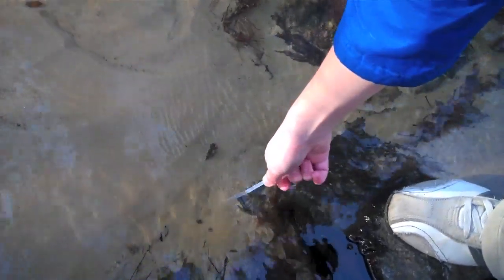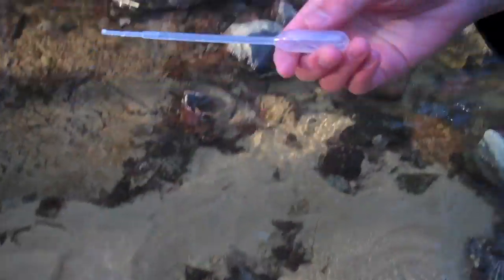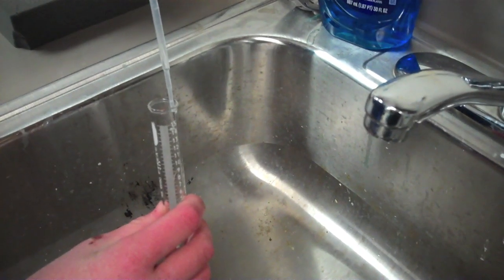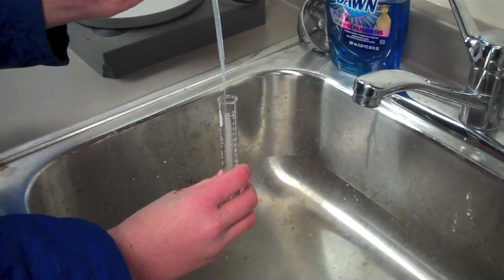The first step is to collect water from a natural source such as this creek. Next, place 1 to 5 milliliters of water into a graduated cylinder.